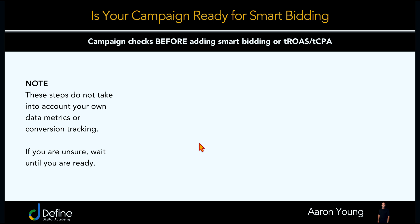So with those golden rules said, let's now jump into a screen share so I can walk you through the checklist I use to make decisions about changing my bidding strategy. What we're really looking at is: is your campaign ready for smart bidding? One thing I do want to note is that these steps do not take into account your own data metrics or conversion tracking. If you're unsure on anything, you need to wait. Targets are going to be different for all businesses — some e-commerce clients want a target ROAS of 200% because they're focusing on lifetime value, whereas for others it needs to be 900%. For lead generation, some need a cost per conversion under $10, while others accept $250 or even $500 because they have high-ticket products.